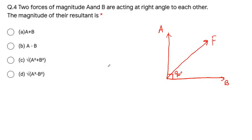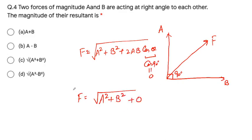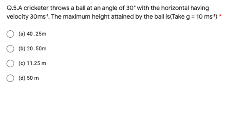The next question is: two forces of magnitude A and B are acting at right angles to each other. One force A is acting in one direction and force B is acting such that the two forces are at 90 degrees to each other. We have to calculate the magnitude of the resultant force.